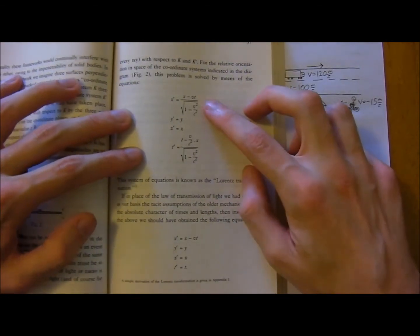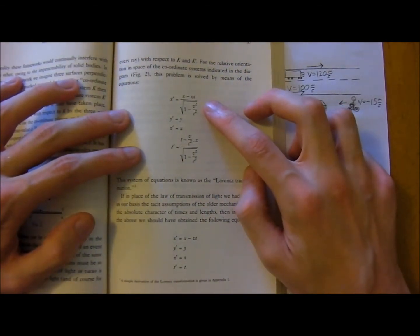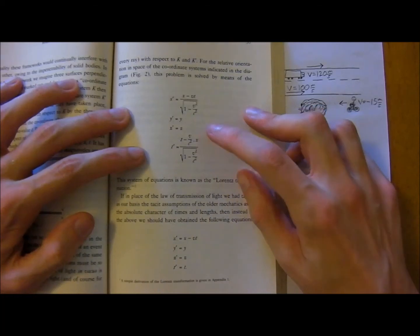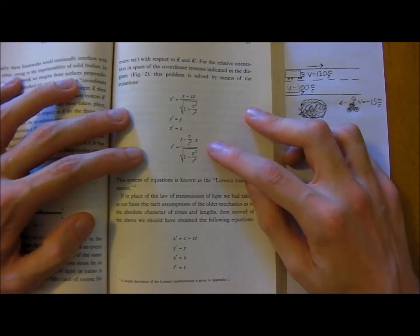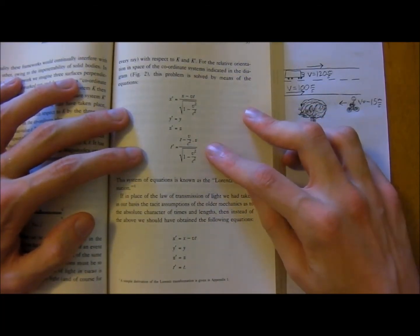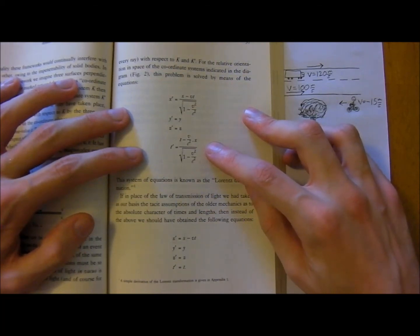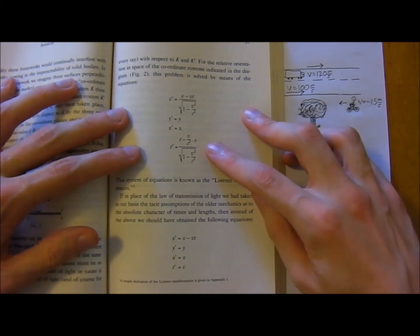And so x-naught is actually equal to this, y is still y-naught, z is still z-naught, but time is now a little more complicated to understand as well, and we'll talk about that more in future videos. Okay, thank you, have an excellent day.